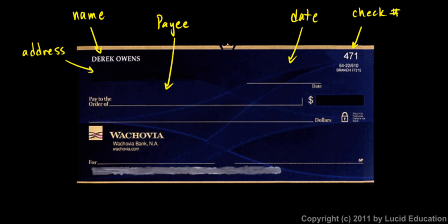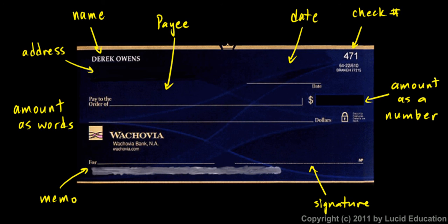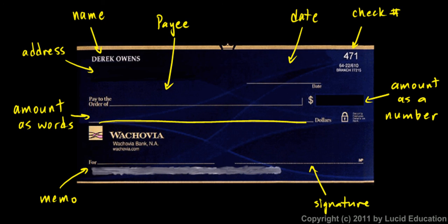There's a memo line down here, just to make a little note of what the check is for. And there's a place to sign the check right here — this is where you would put your signature. Now there are two other important things: this box right here has a place where you write the amount of money as a number. And then the line right below is where you write the amount of money as words. So you write the amount as a number and as words, and that way the banker reads it in both places and makes sure they match up.